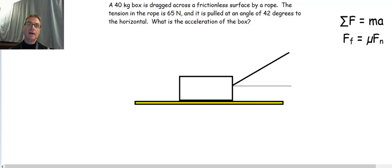What we want to do today is take a look at another one of Newton's laws problems. We've got here a 40 kilogram box sitting on a floor, dragged across a frictionless floor surface by a rope. The tension in the rope is 65 Newtons, and it's pulled at an angle of 42 degrees. So it's not a purely horizontal force, it's also not a purely vertical force, it's at some angle.